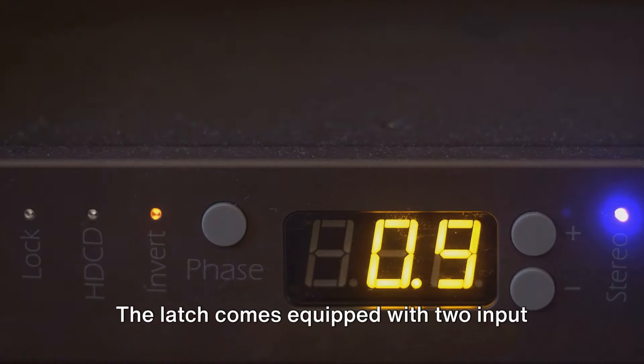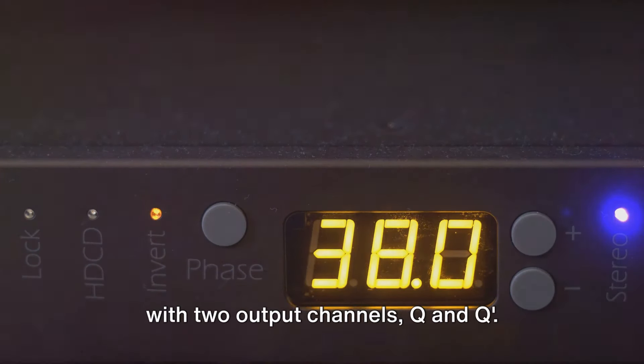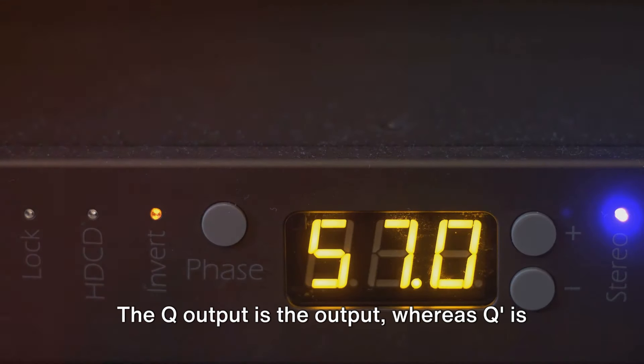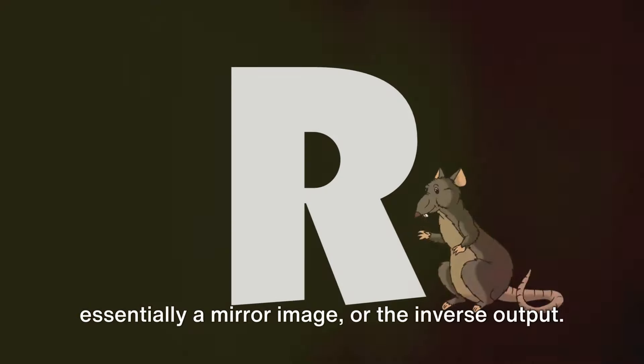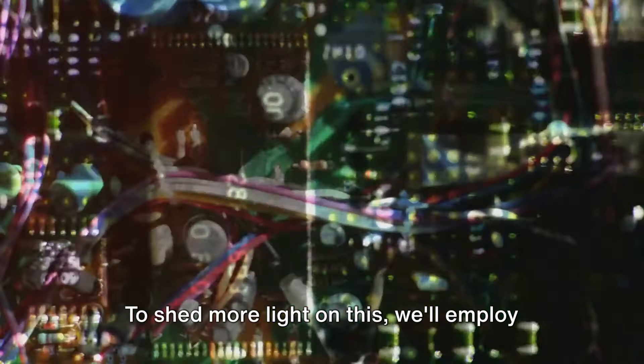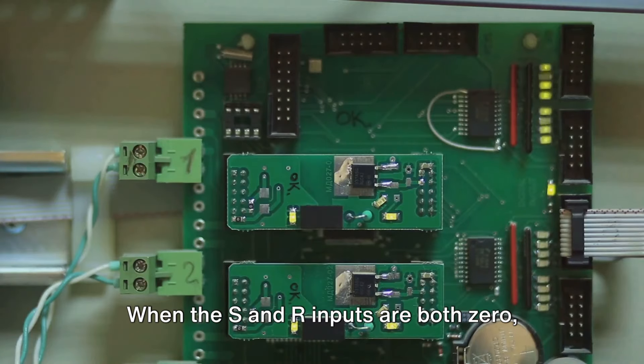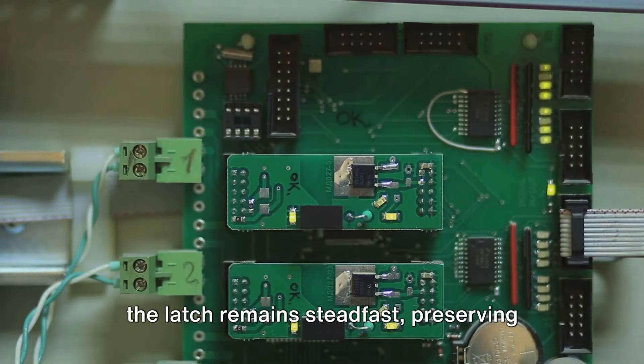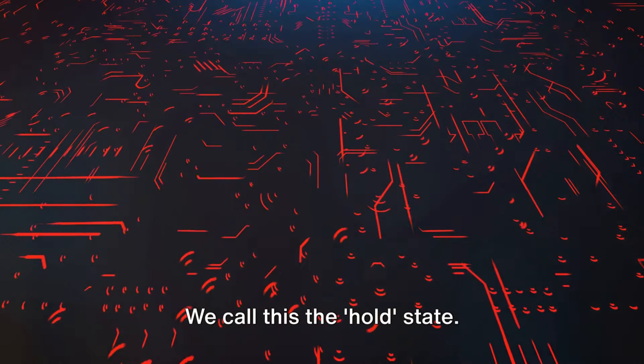The latch comes equipped with two input channels, S for Set and R for Reset, along with two output channels, Q and Q'. The Q output is the output, whereas Q' is essentially a mirror image, or the inverse output. To shed more light on this, we'll employ a truth table and visual diagrams. In our table, S stands for Set Input, R for Reset Input. When the S and R inputs are both zero, the latch remains steadfast, preserving its preceding state. We call this the hold state.